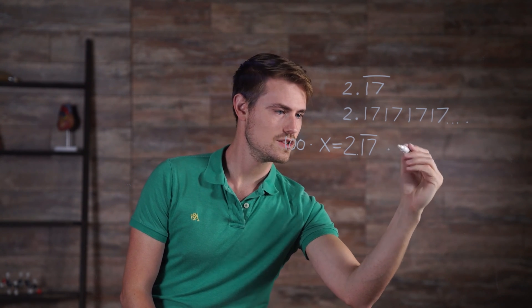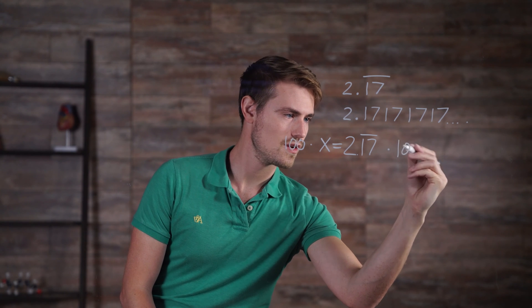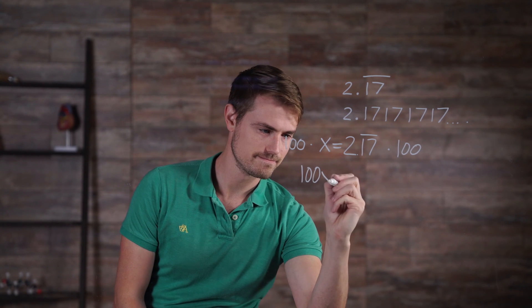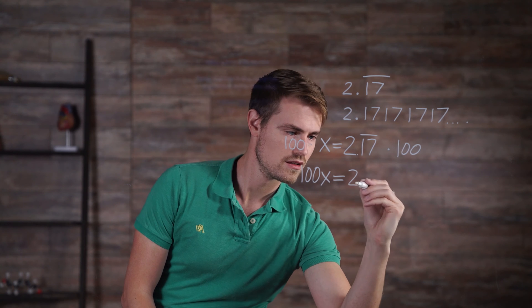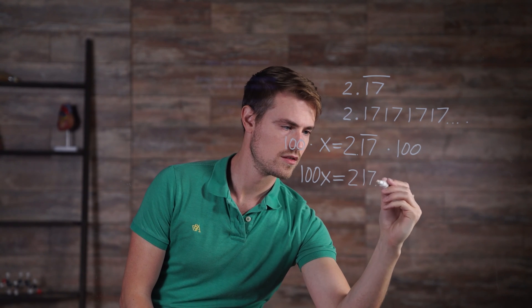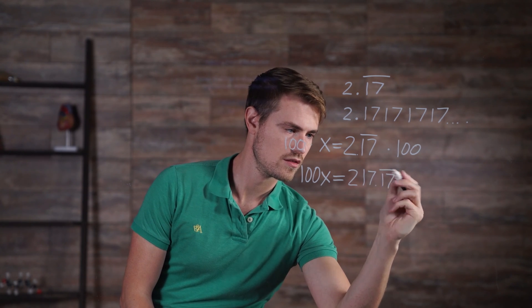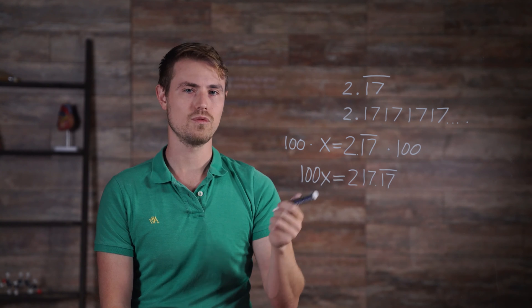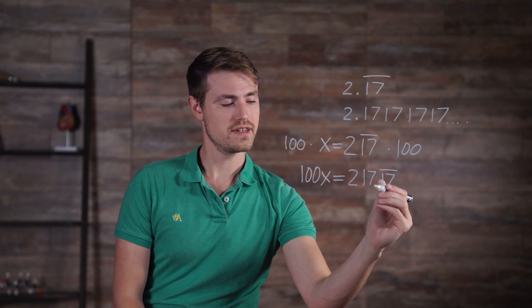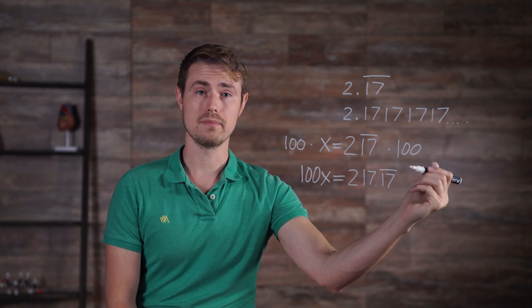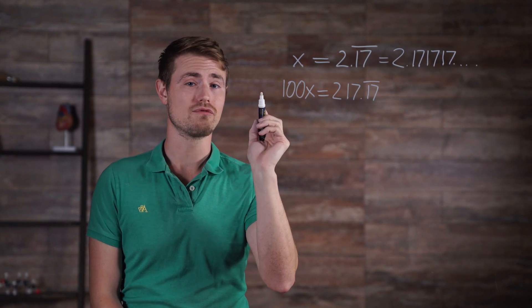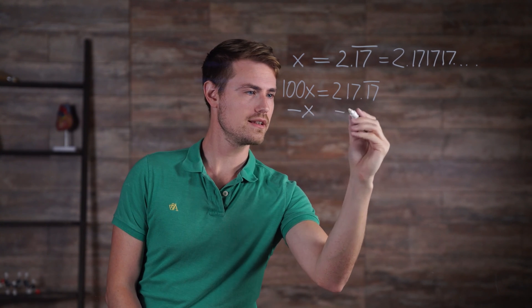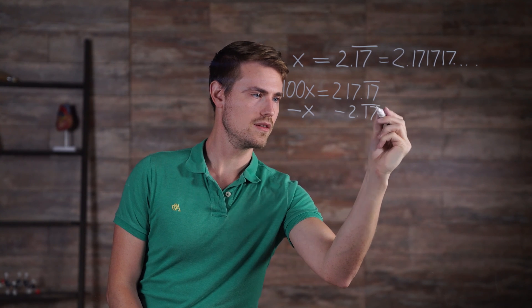100 times x, 2.17 repeating times 100. This results in 100x which is equal to 217.17 repeating. We moved the decimal over two spots because we multiplied by 100. Now let's subtract the original equation from this one, meaning minus x and minus 2.17 repeating.